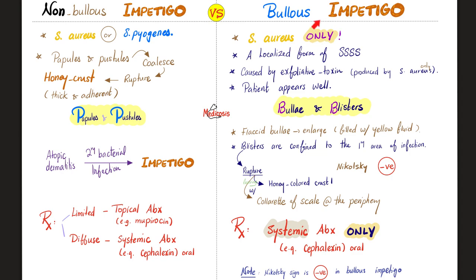Next, bullous impetigo — Staph aureus only. It's a localized form of the Staphylococcal Scalded Skin Syndrome caused by the exfoliative toxin, which is made by Staph aureus only — not by Streptococcus pyogenes. The patient appears well for the most part. We have bullae and blisters — flaccid — they enlarge and get filled with yellow fluid.